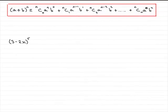Hi. Welcome to the solution to this question. Now, we've got to expand 3 minus 2x to the power 5 using the binomial expansion formula and find the first three terms.